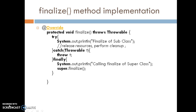Looking at the finalize method implementation, it uses a try-catch block, and in the finally block we call super.finalize(). It is the developer's responsibility to call the superclass finalize method. The finalize method returns nothing — it has void as the return type and protected as the access specifier.